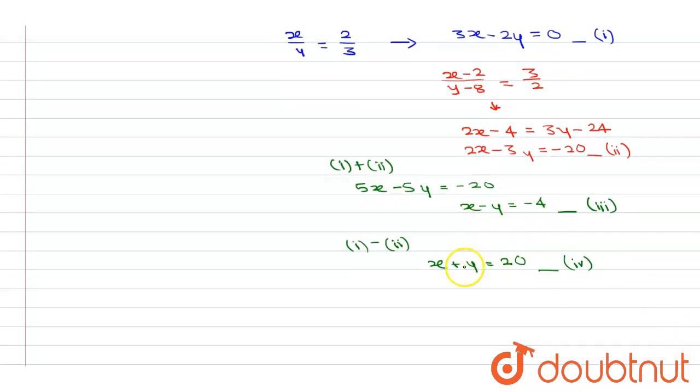Adding these 2 equations 3 and 4 will get us 2x is equal to 16. Therefore, x is equal to 8. Put x is equal to 8 in this equation, we get y is equal to 12.